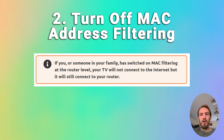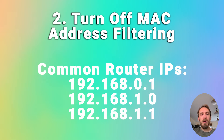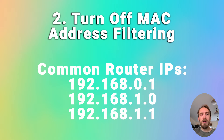On your phone or laptop, go to the admin IP address for your router — that'll be on a label on the router itself, usually something like 192.168.1.1. Log in using the details on the sticker on the router, then go to something like advanced or expert settings, find MAC filtering, and make sure it's switched off.